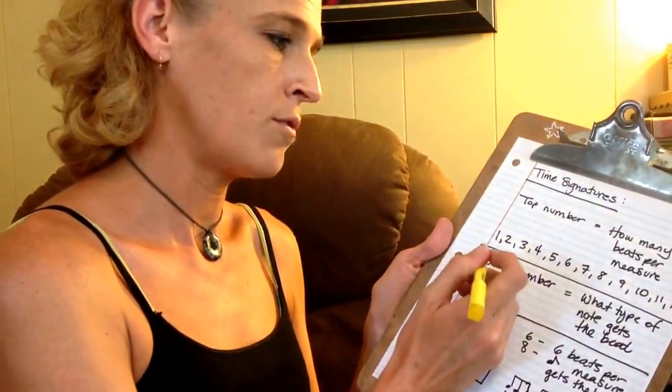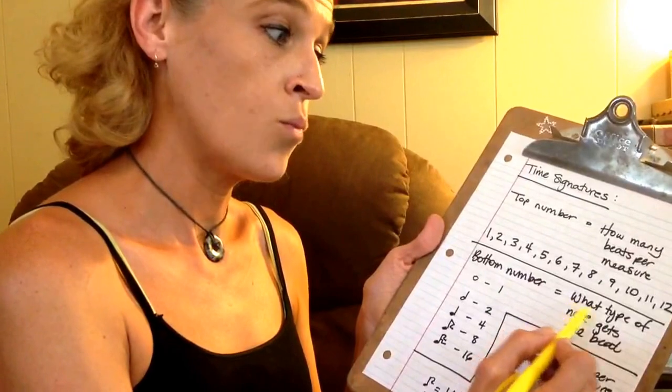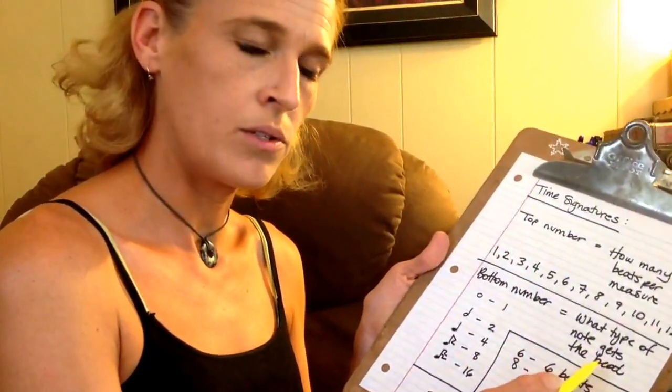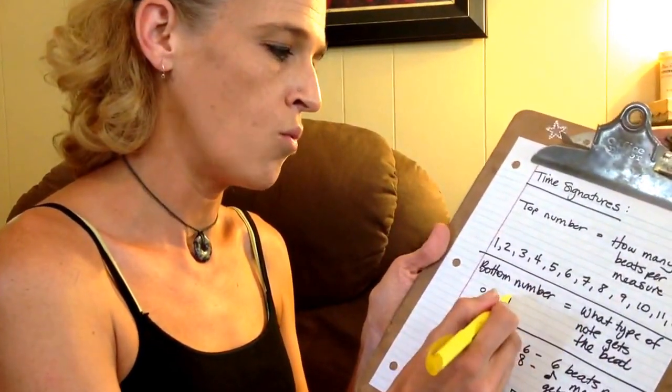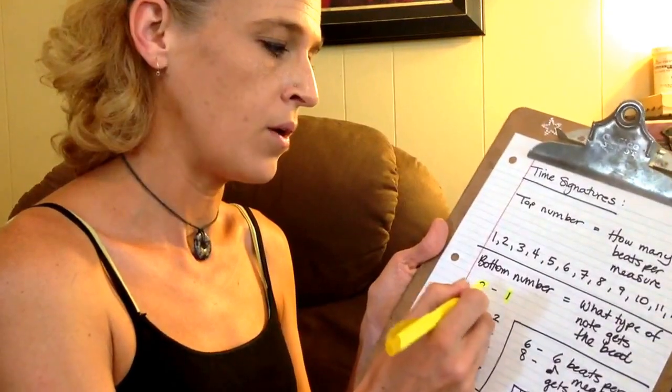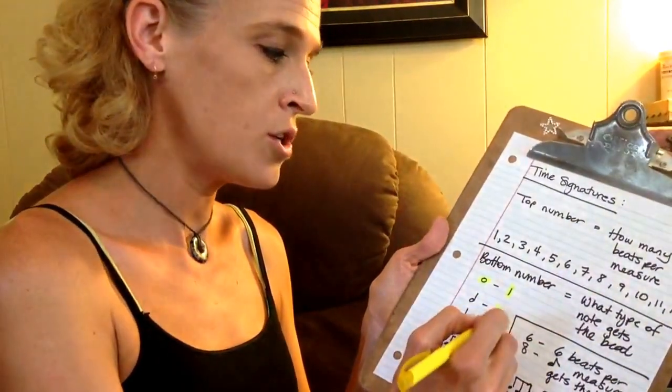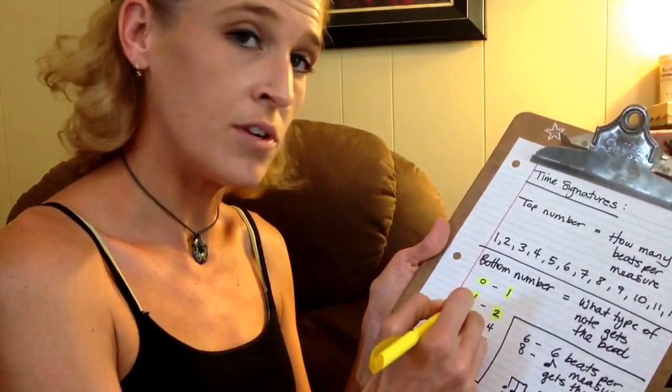The bottom number is a little more confusing - it means what type of note gets the beat. If you see a 1 on the bottom, that's a whole note. If you see a 2 on the bottom, that's a half note gets the beat.